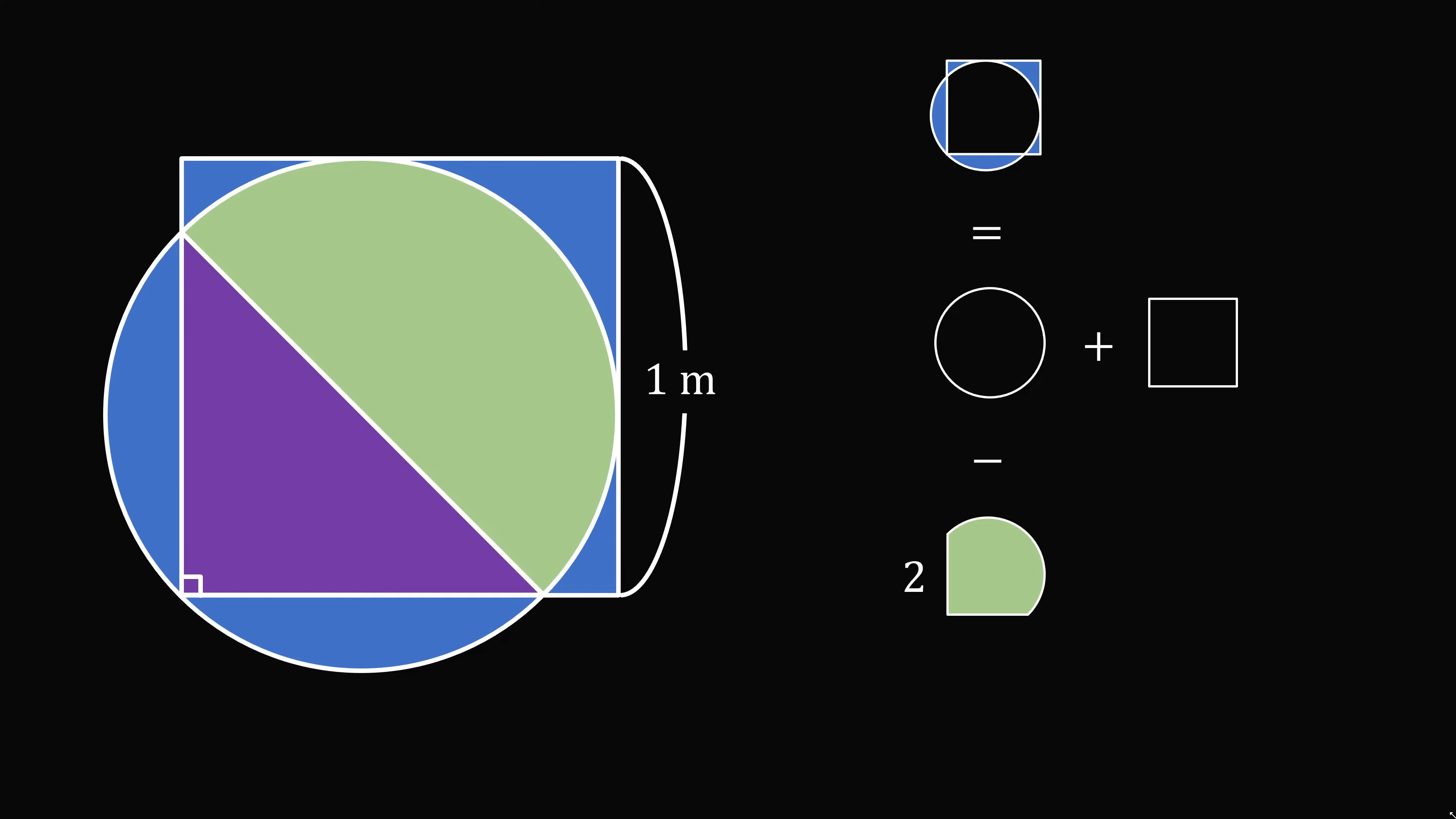construct the following right triangle. Since we have an inscribed 90 degree angle, the arc that it subtends will be a 180 degree arc. Therefore, the hypotenuse of this right triangle is the diameter of the circle, which means that this is a semicircle. So we can replace the region that's overlapping by the area of the triangle plus the area of the semicircle.